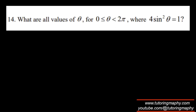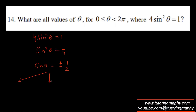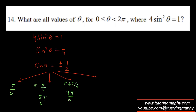Final question: find values of θ where 4sin²(θ) = 1. So sin²(θ) = 1/4; taking the square root with ± gives sin(θ) = ±1/2. Solutions in all four quadrants. Reference angle is π/6. Quadrant 1: π/6; quadrant 2: 5π/6; quadrant 3: 7π/6; quadrant 4: 11π/6. Four solutions total.